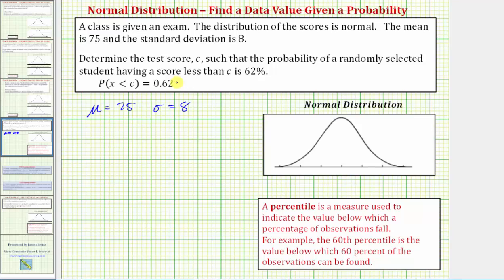Let's begin by modeling this distribution using the normal distribution curve. Because the mean is equal to 75, 75 would be here in the middle. The horizontal axis is scaled by standard deviations. To the right we'd have 75 plus 8 which is equal to 83, 83 plus 8 is equal to 91, and 91 plus 8 is equal to 99. To the left of 75 we'd have 75 minus 8 which equals 67, 67 minus 8 is equal to 59, and 59 minus 8 is equal to 51.